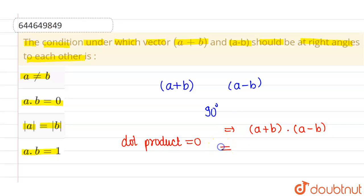Now if I perform dot product, this will be magnitude of a whole square. This is a dot with a, minus a dot with b, plus b dot with a, and last one is minus magnitude of b square.